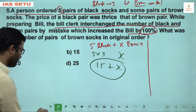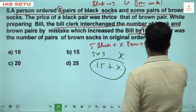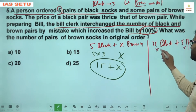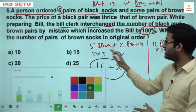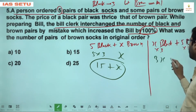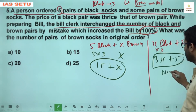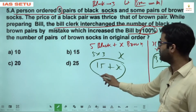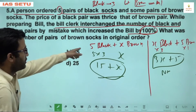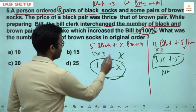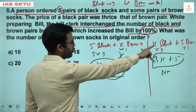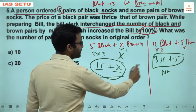Original bill: 5 black × Rs. 3 + X brown × Rs. 1 = 15 + X. After mistake: X black × Rs. 3 + 5 brown × Rs. 1 = 3X + 5. Since the bill doubled, 3X + 5 = 2(15 + X). Solving: 3X + 5 = 30 + 2X, so X = 25.